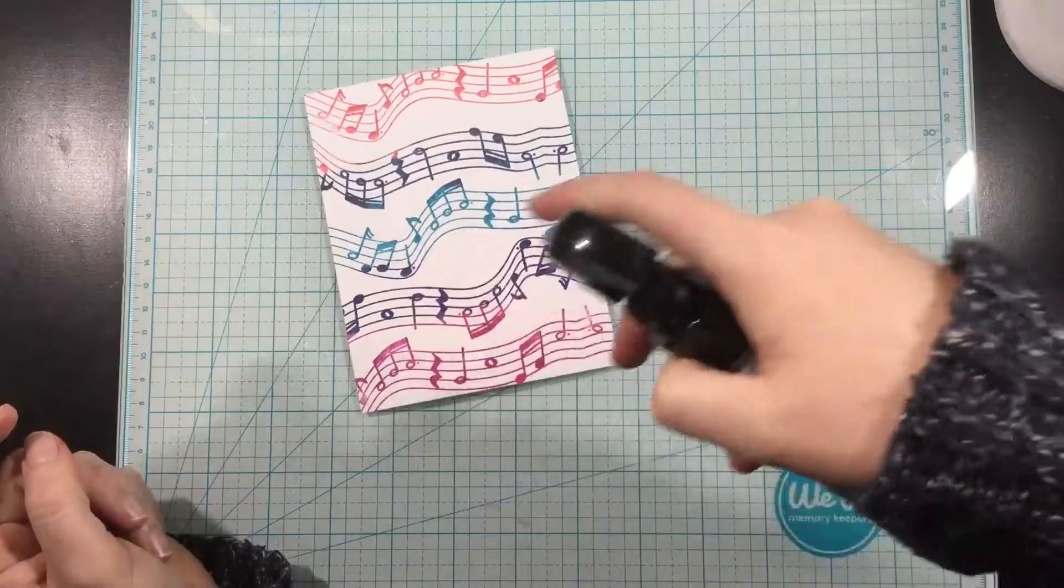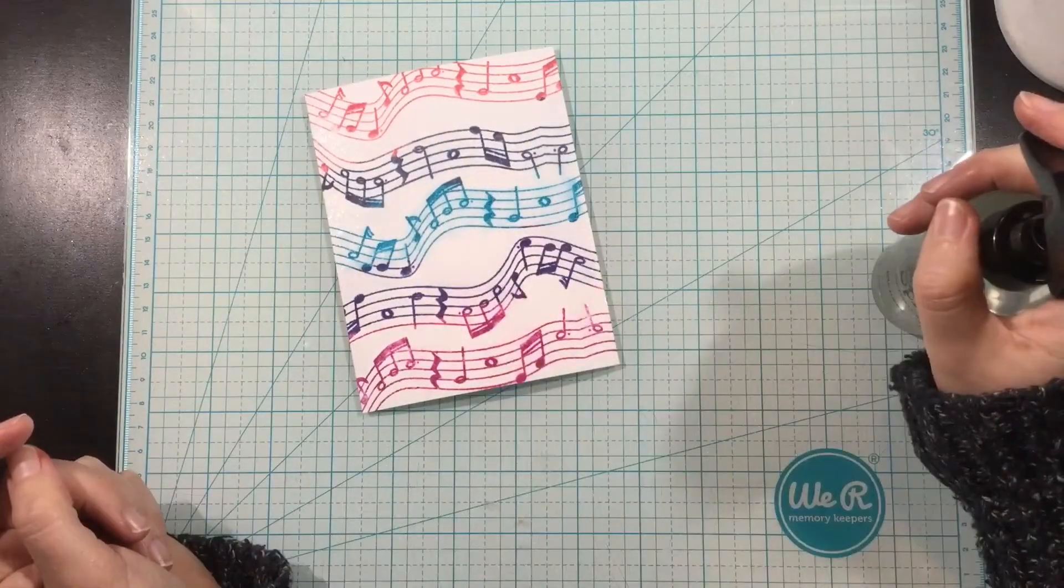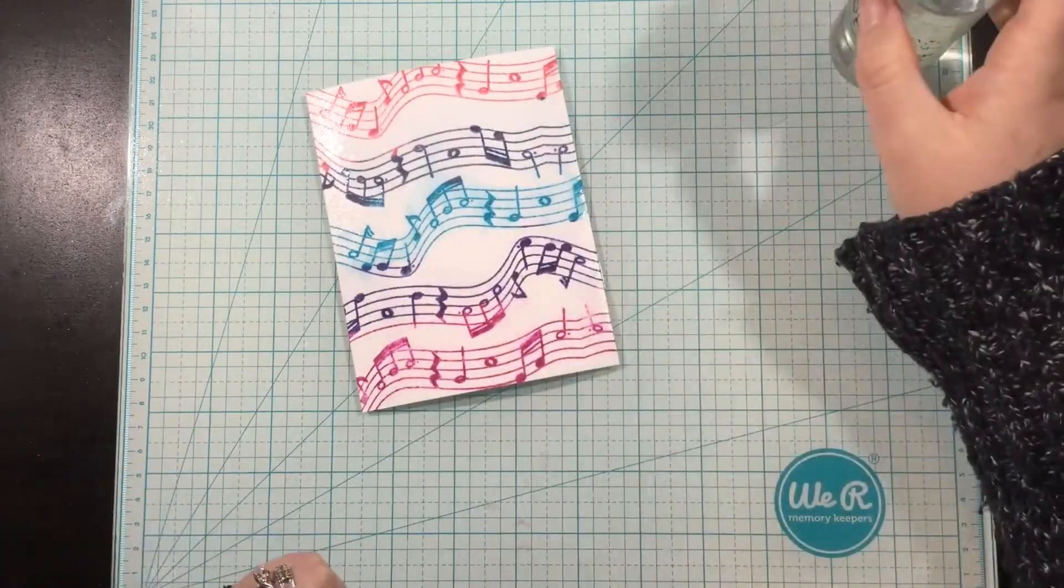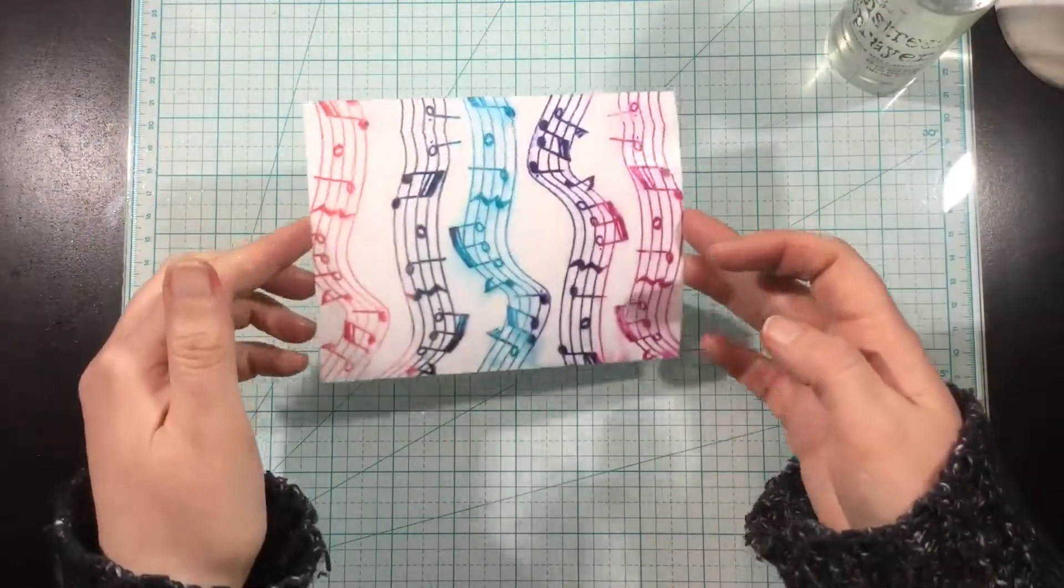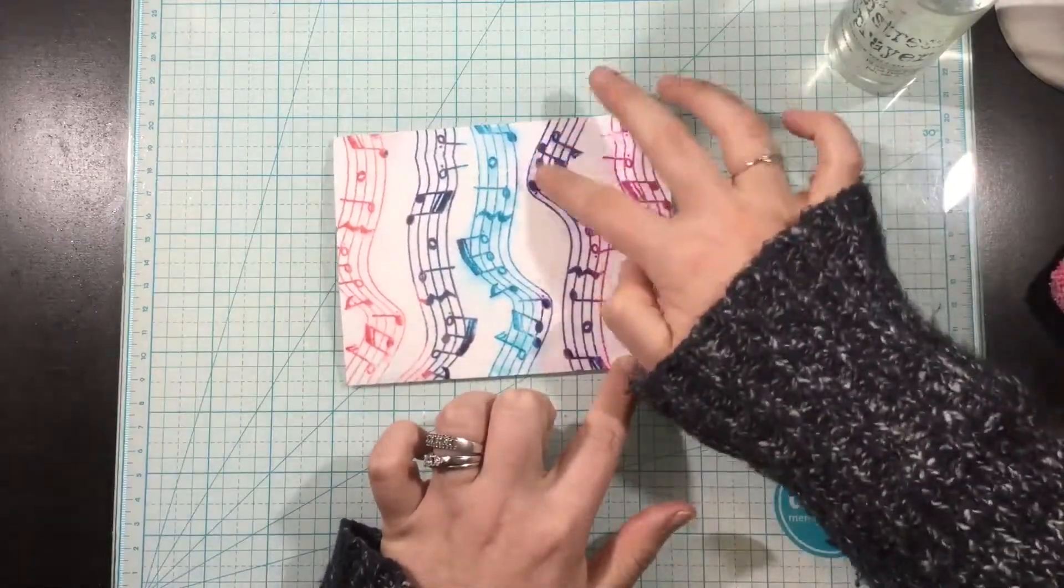Now I'm going to use a Tim Holtz distress sprayer and just spritz this a little bit with water. I'm not working on watercolor cardstock, I'm working on the stark white cardstock, so I don't want to add too much water. Probably maybe five or six sprays. At first I was kind of disappointed because only the one ink started running.